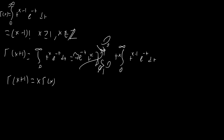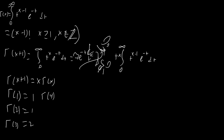Note this functional equation is valid as long as x is greater than or equal to zero, because otherwise the t to the x term at zero becomes infinity and causes problems. Now, plugging in gamma of 1, that's just the integral from zero to infinity of e to the negative t, which evaluates to 1. Using our functional equation, gamma of 2 is 1 times gamma of 1, which is 1; gamma of 3 is 2 times gamma of 2, which is 2; gamma of 4 is 3 times 2, which is 6. As you can see, it keeps following the factorial pattern.